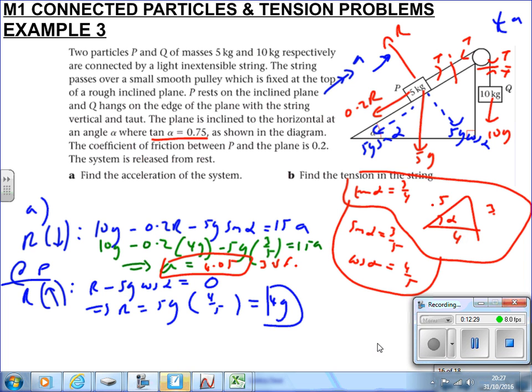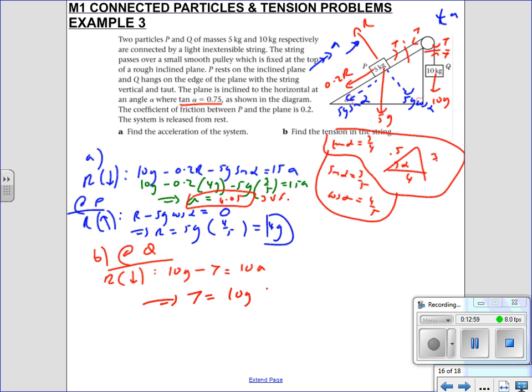Part b says find the tension in the string. As you know, we have to isolate one section. It makes sense to isolate Q because otherwise everything cancels out. If we resolve in the direction of acceleration, everything's going down at Q. The force going down is 10g, tension opposing it, equals total mass times a. We know what a is. So if we get tension as the subject, that's 10g subtract 10a. A is the thing we just found, which is on my calculator—I'll use the exact value. So 10 times 9.8 subtract 10 times answer gives me 57.5 newtons to 3 sf, and we're happy.